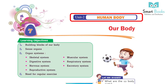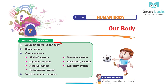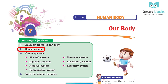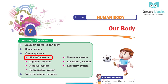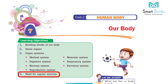Unit 2: Human Body, Chapter 7 – Our Body. Learning objectives: 1. Building blocks of our body. 2. Sense organs. 3. Organ systems – skeletal system, muscular system, digestive system, respiratory system, nervous system, excretory system, reproductive system. 5. Need for regular exercise.